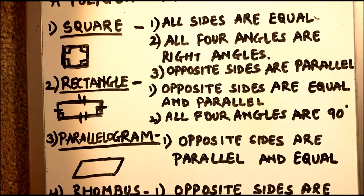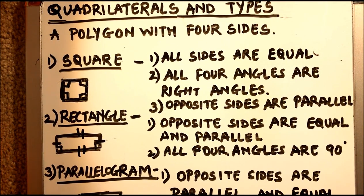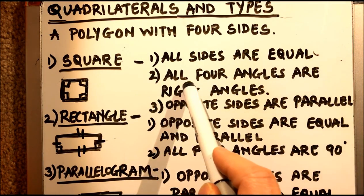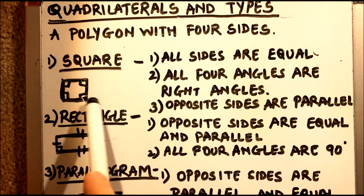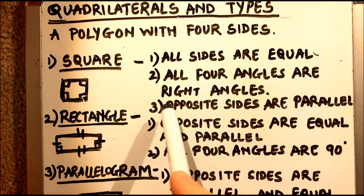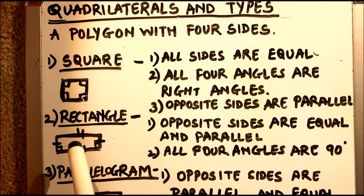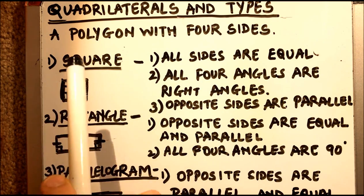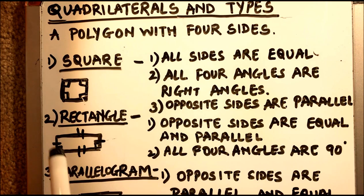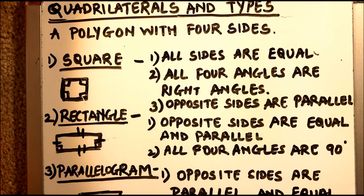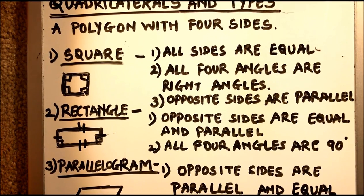Let's take a quick recap of all the quadrilaterals. First we have a square: all sides are equal, all four angles are right angles or 90 degrees, and all opposite sides are parallel — parallel meaning they are equidistant and will never meet. Next is rectangle: opposite sides are equal and parallel, all four angles are 90 degrees, but only opposite sides are equal, not all sides.